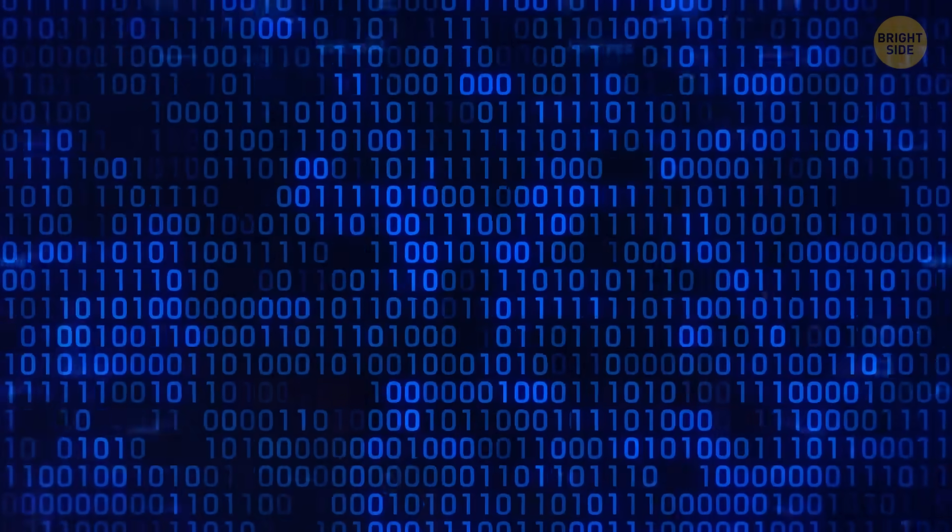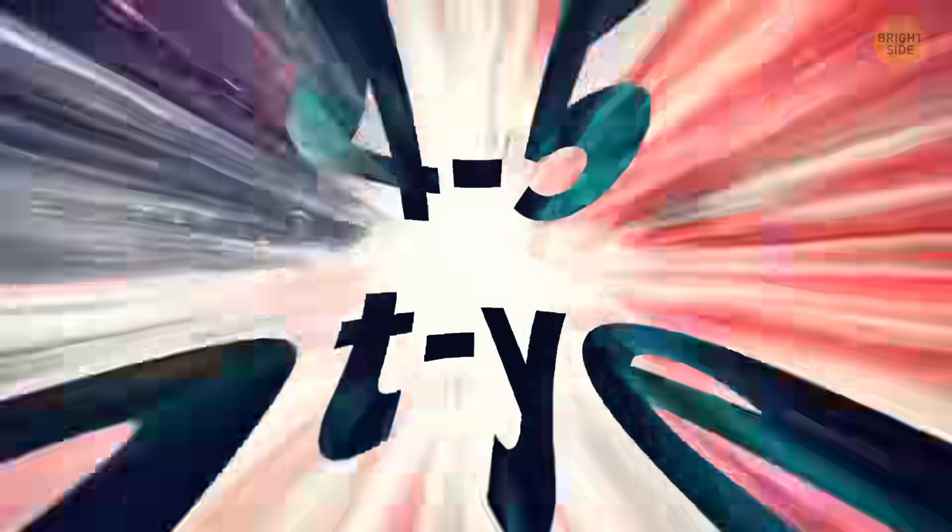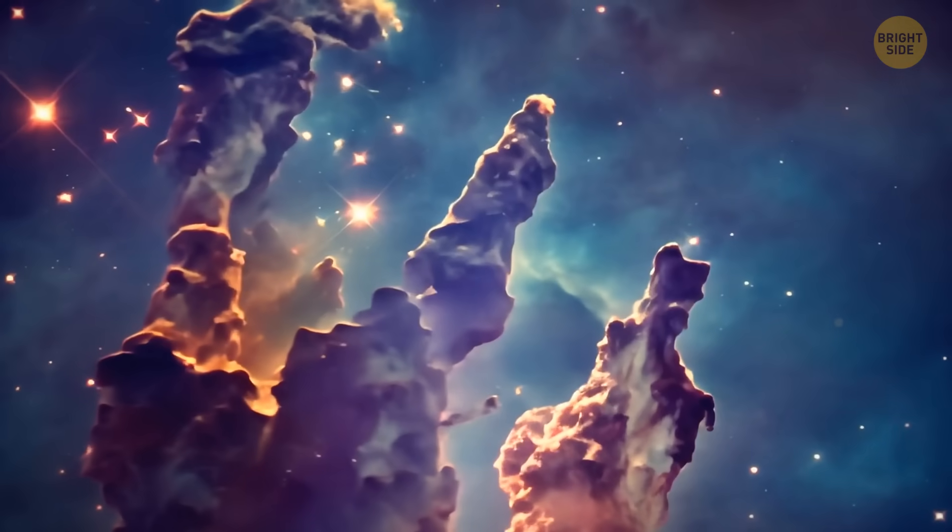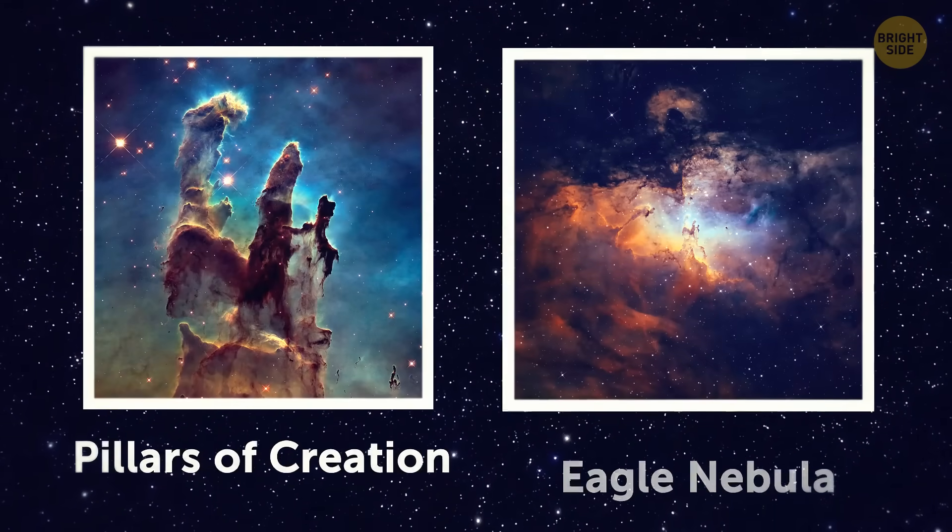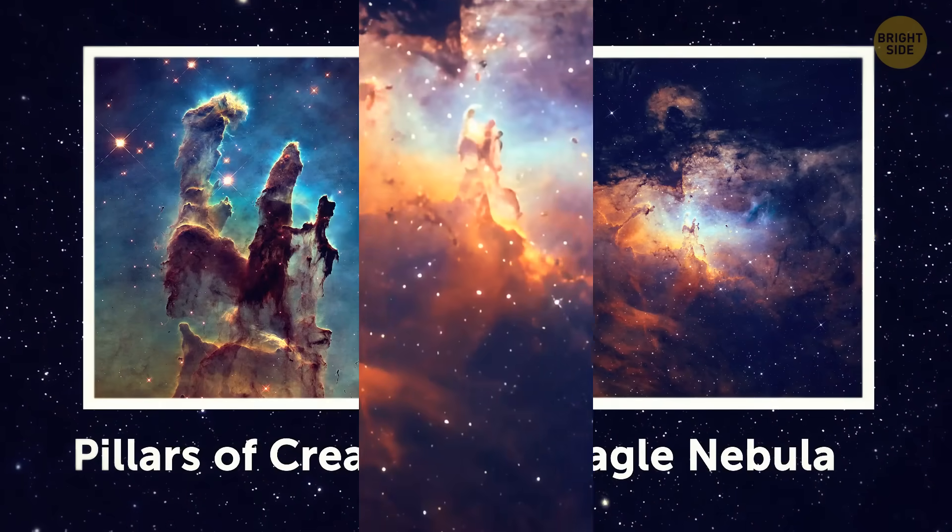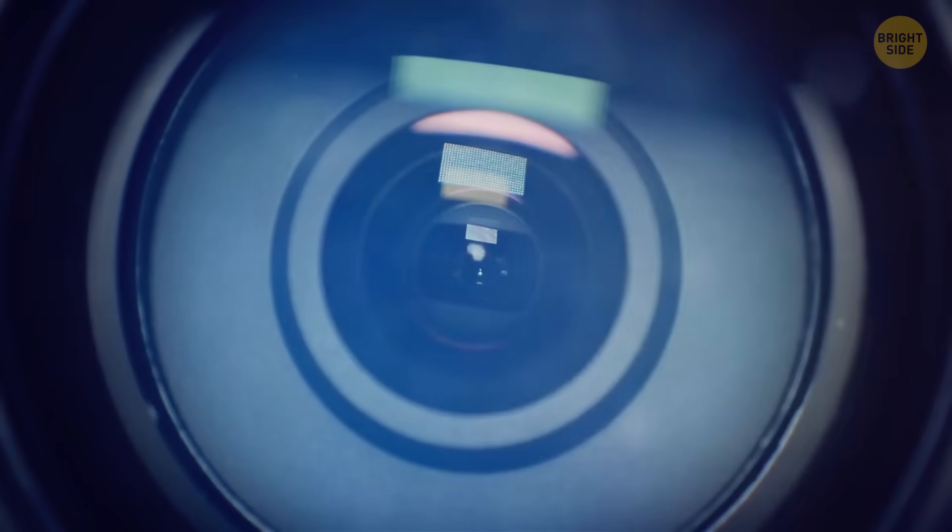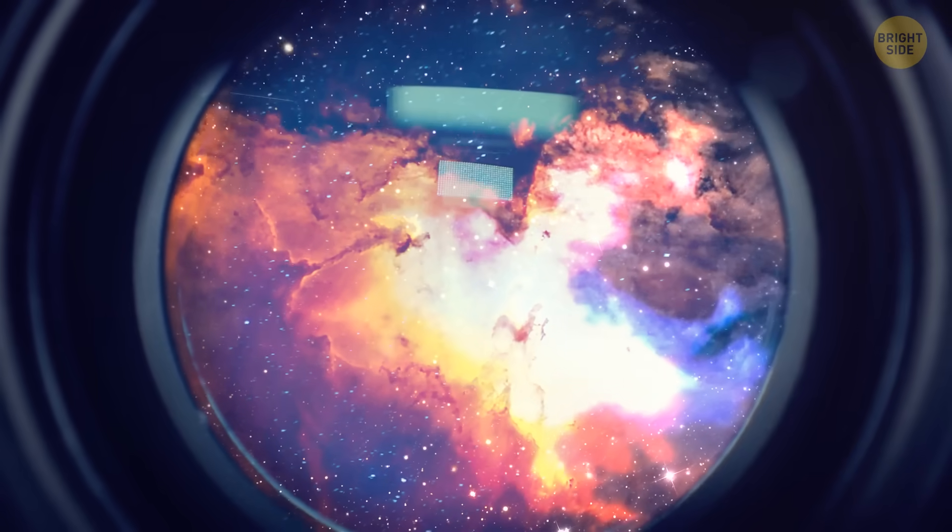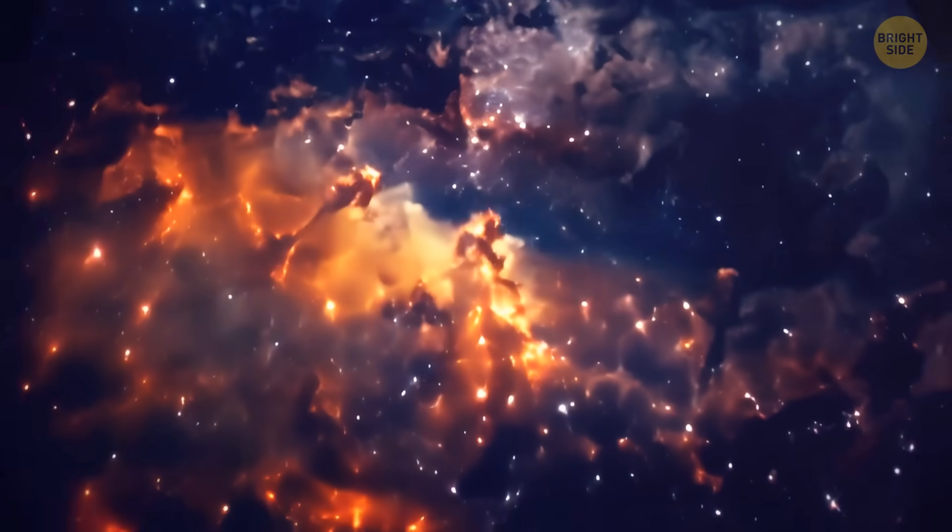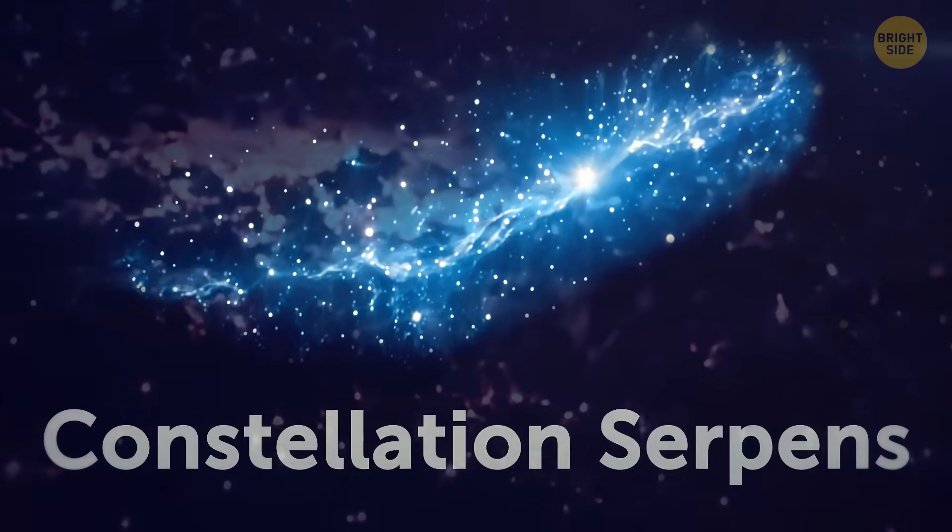Brace yourself for the numbers, too. These Pillars of Creation stretch out for about four to five light years. Yeah, it sounds big, but in the grand scheme of things, they're kind of like the cute little siblings of the larger Eagle Nebula, which spans a whopping 70 by 55 light years. The nebula was first spotted back in 1745 by an awesome Swiss astronomer, and it's about 7,000 light years away from our humble abode in the constellation Serpents.